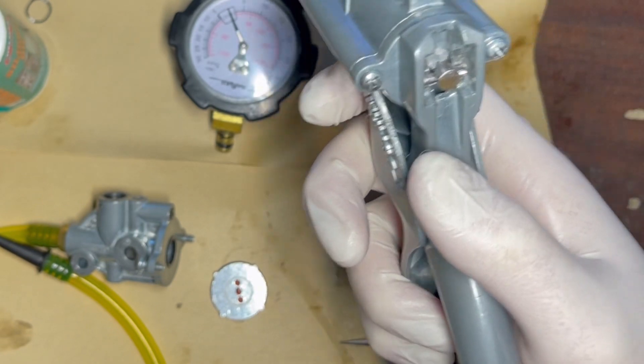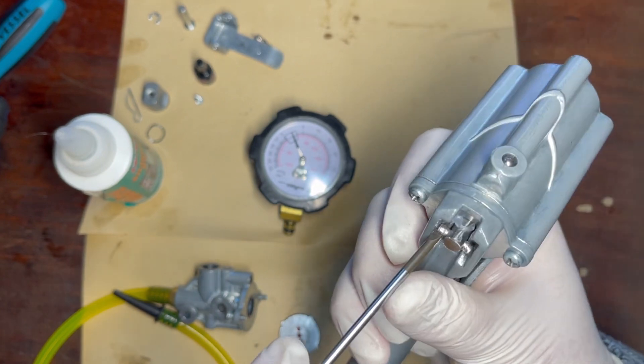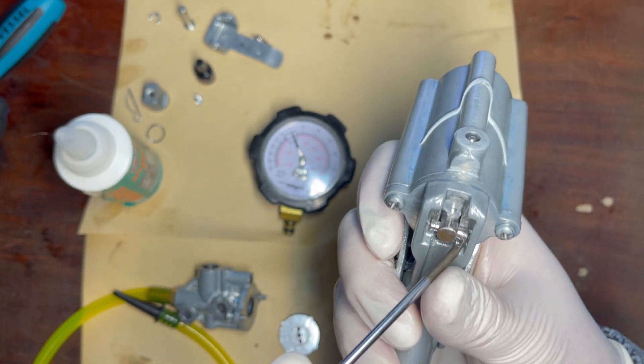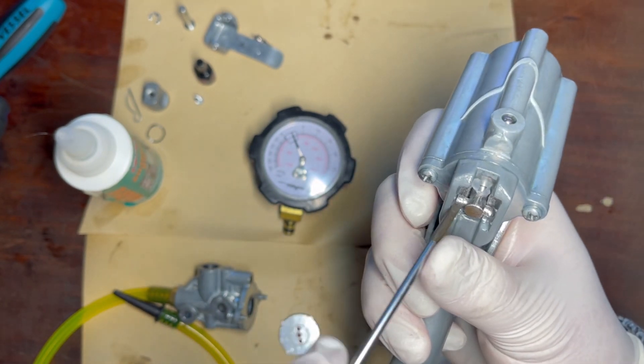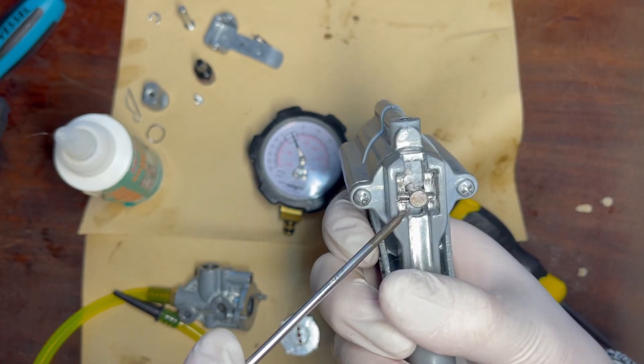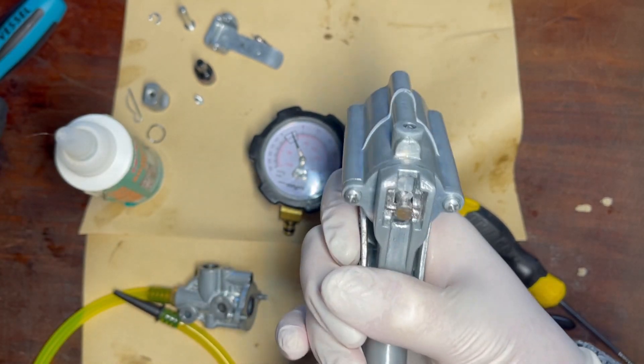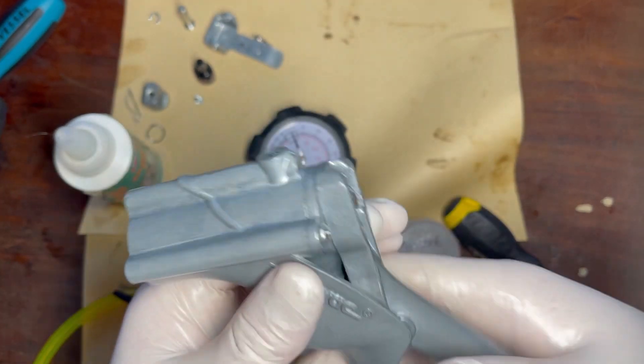And then we're going to take a screwdriver and we're just going to open up one side of this split pin. And what it does is it just keeps this tracking much nicer. So turn it nice and carefully with the screwdriver. And that has now opened that pin up slightly and it will tend to track a bit more evenly as you're pumping the piston.